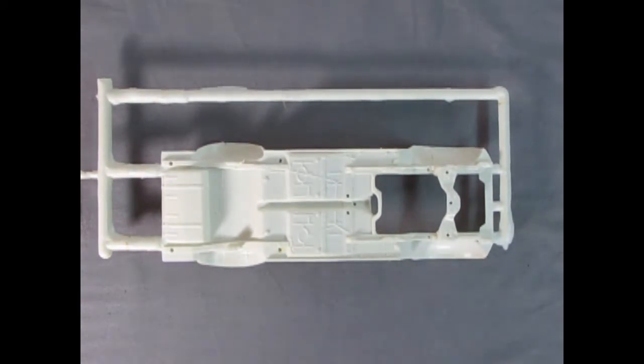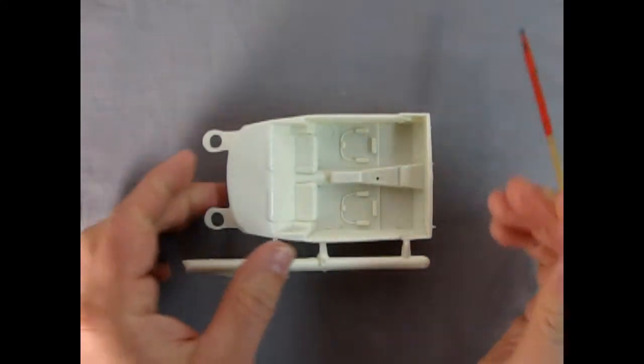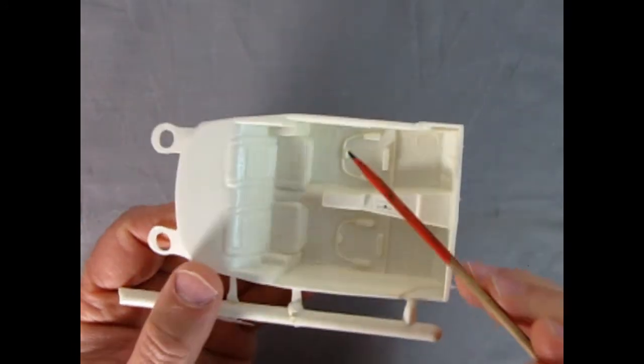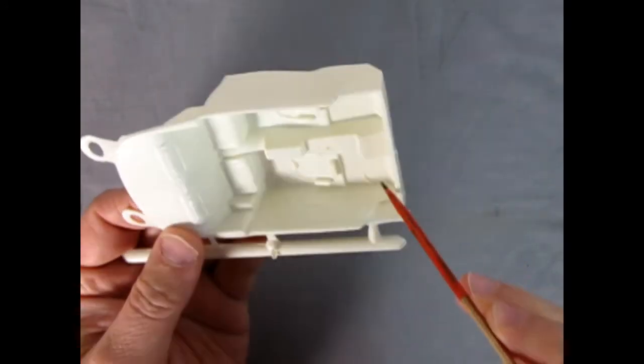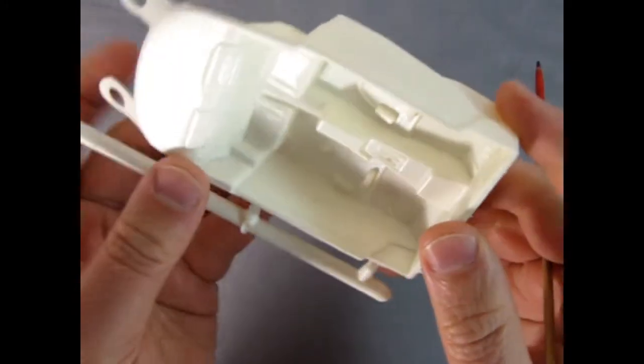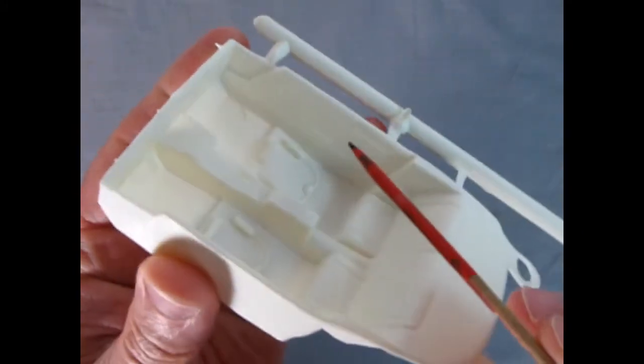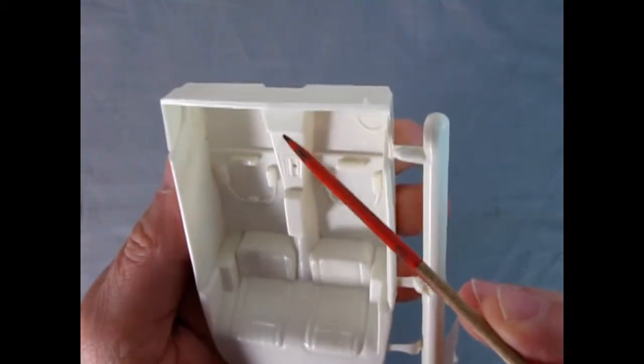Here we have our interior tub and there are some big issues in here with these sink marks in the floor. They're really deep and really huge as you can see here, not quite the best of molds. Again though, the rest of the interior is not bad.